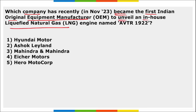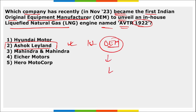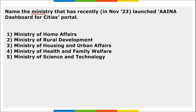Ashok Leyland became the first Indian Original Equipment Manufacturer (OEM) to unveil an in-house LNG engine named EVTR 1922. The Ministry of Housing and Urban Affairs recently launched the AINA Dashboard for Cities Portal to create a database of key performance metrics of urban local bodies, helping cities develop, stay clean, and providing insights to decision-makers.